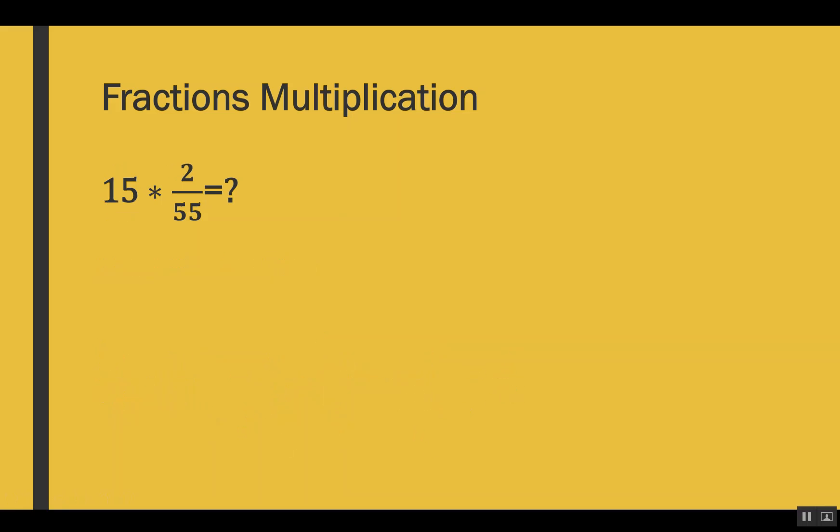Let's see one more example. Here there is a whole number 15 and we have to multiply a fraction 2 out of 55 with it. Because we don't have a denominator in this case, whenever we have a number without a denominator and need to convert it into a fraction, we can write 1 as the denominator. Dividing any number by 1 will not make any difference in the value.